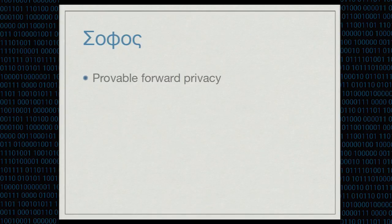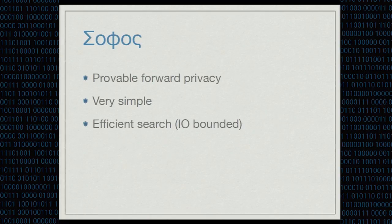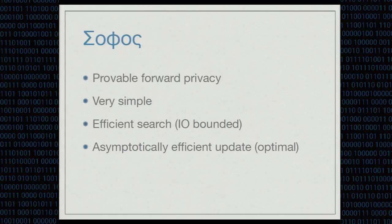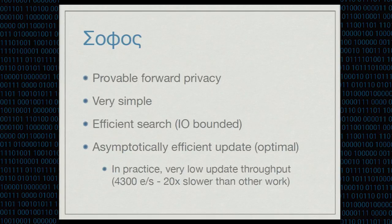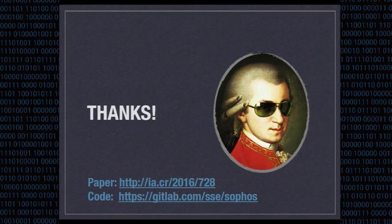So what do we have in the end? We have a scheme that is provably forward private, extremely simple, has really efficient IO-bounded search, and asymptotically optimal updates. There is one small caveat: in practice, the update throughput is low because the client has to compute many private key operations, making the update throughput roughly 20 times slower than previous work. The paper is on ePrint — please look at the code and modify it as you want.